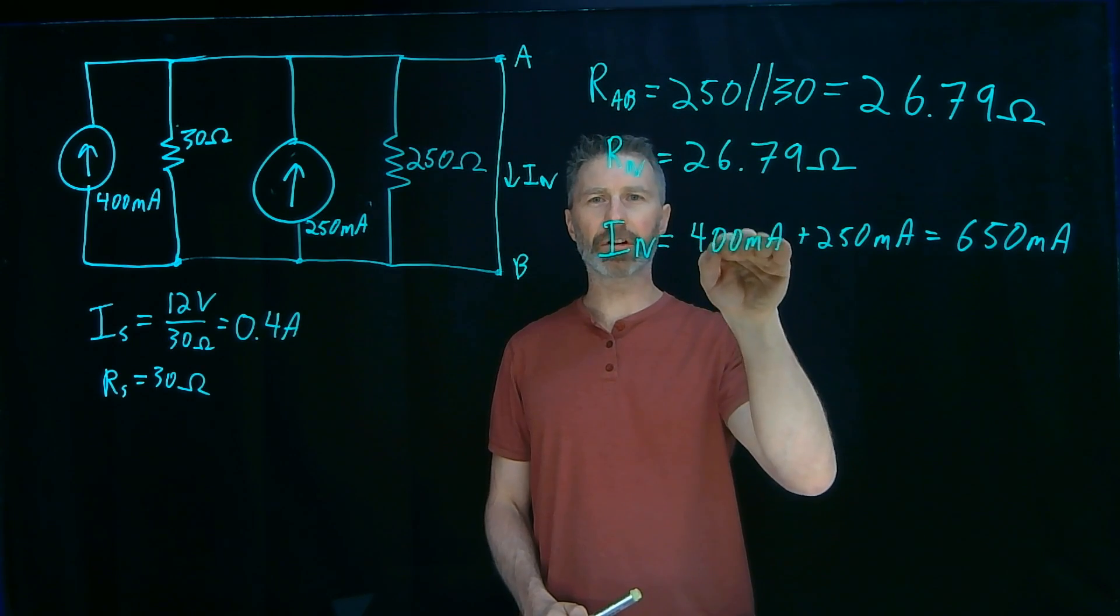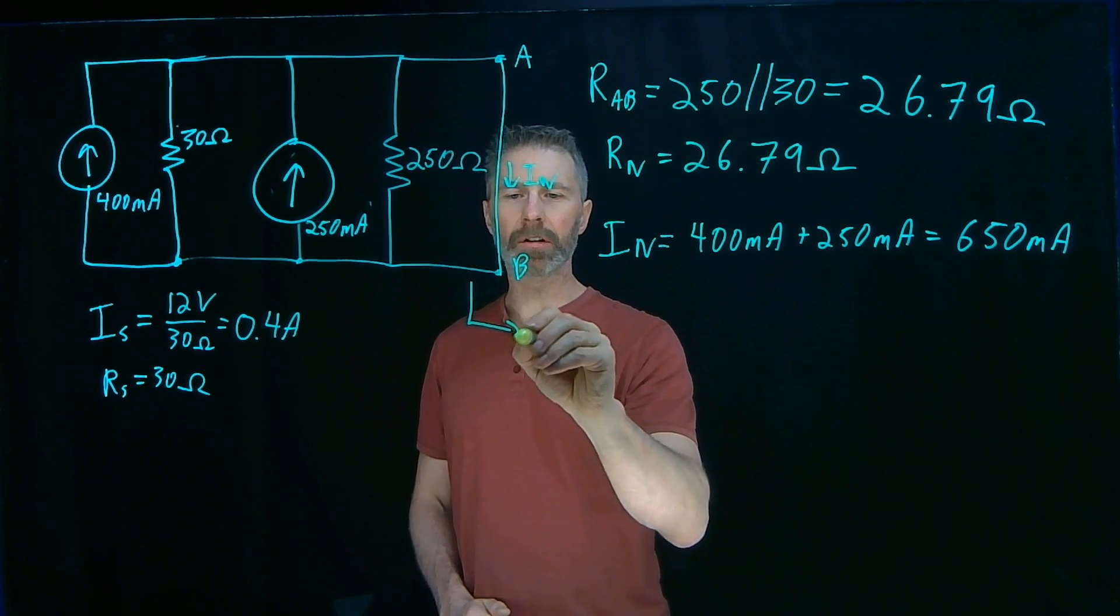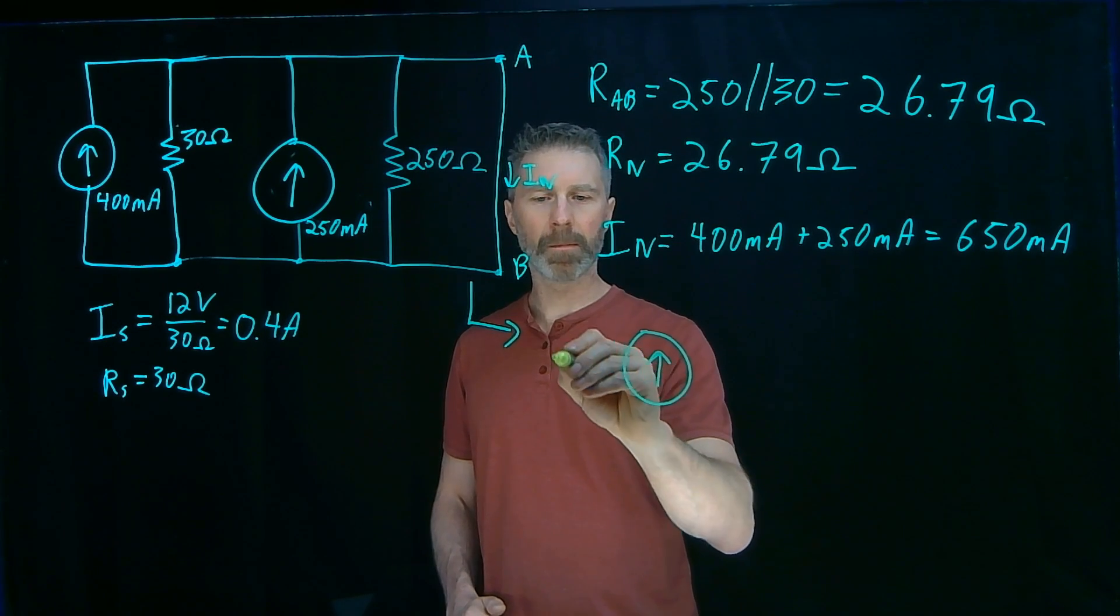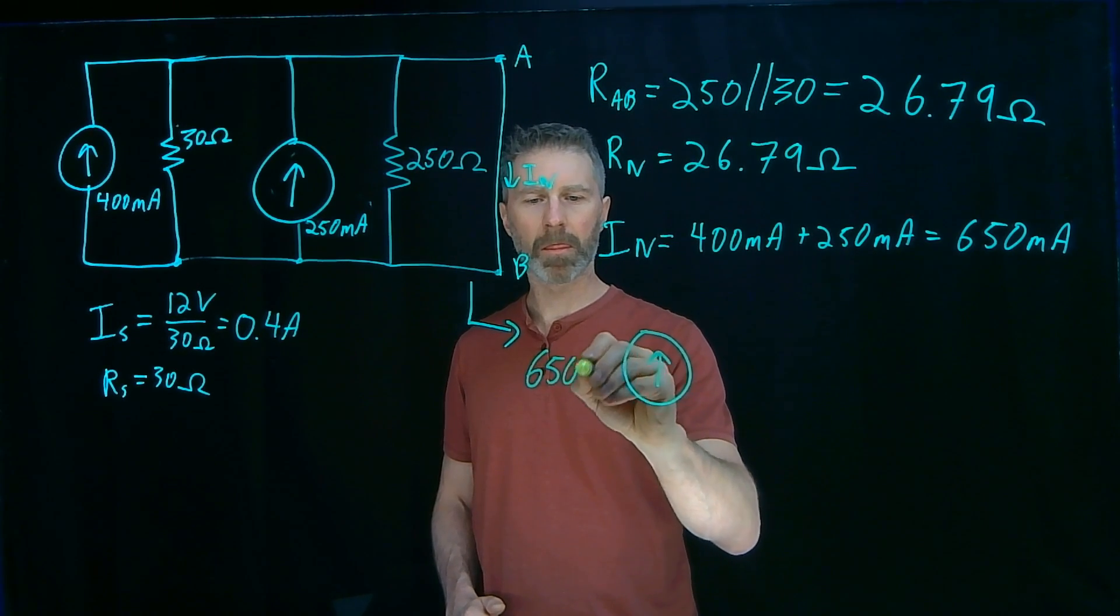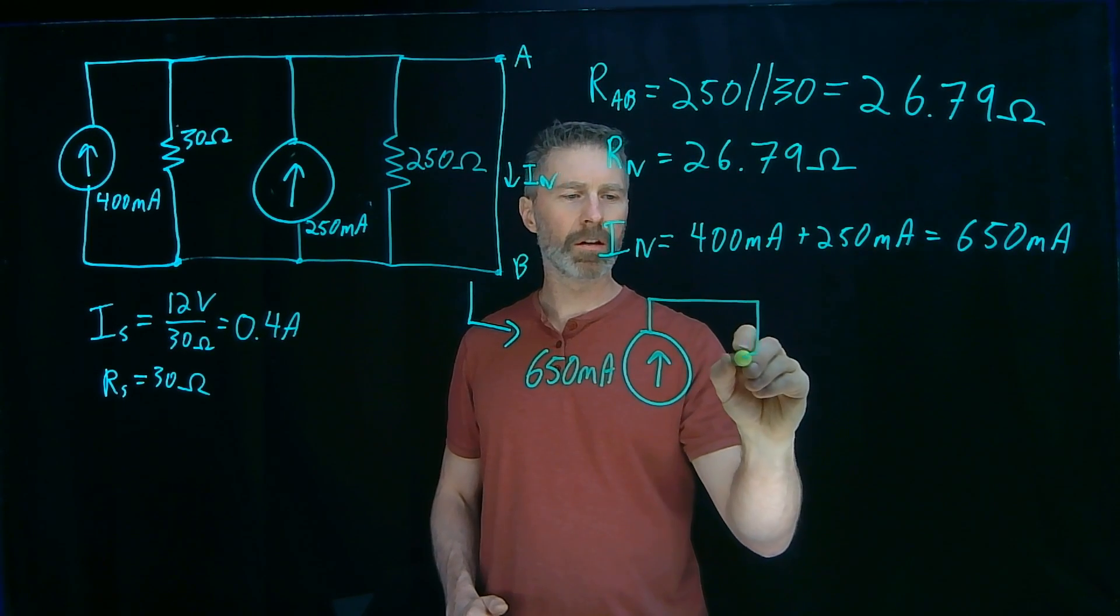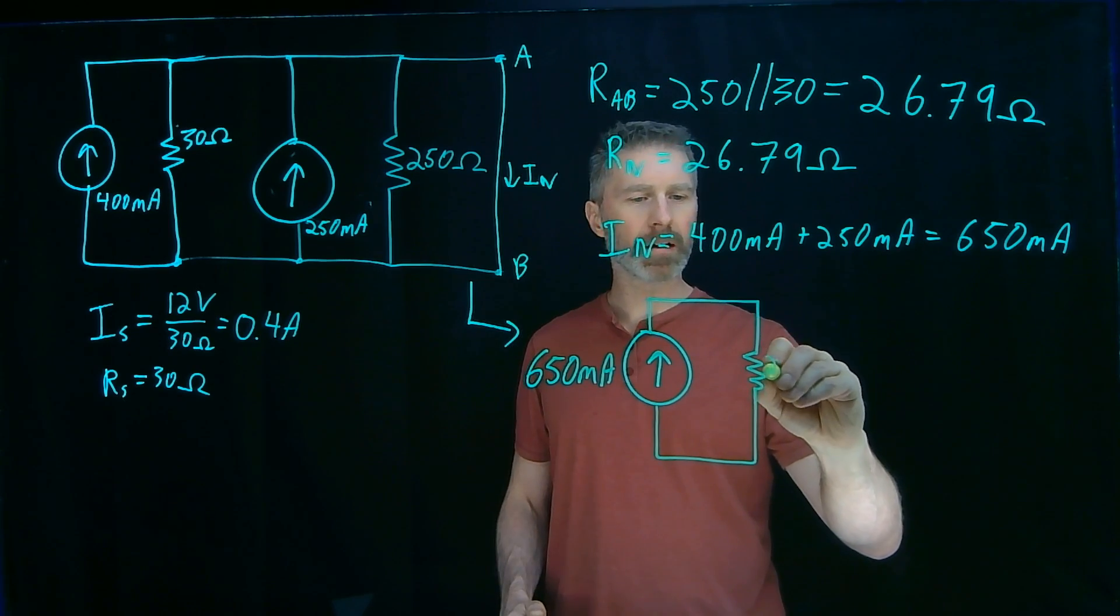I've got the Norton current, I've got the Norton resistance, that means I can now redraw this circuit as the Norton equivalent. 650 milliamp current source in parallel with a 26.79 ohm resistor.